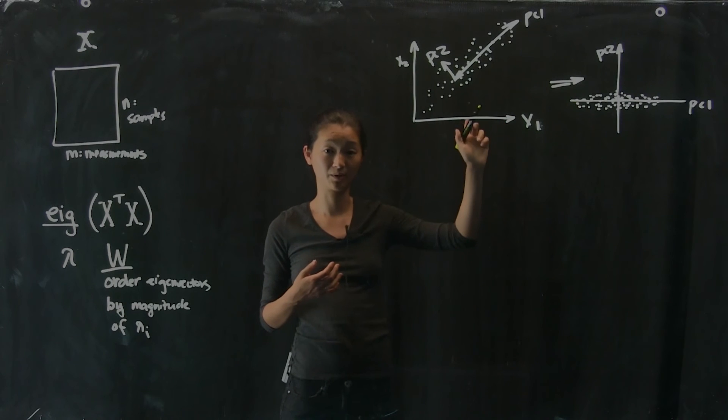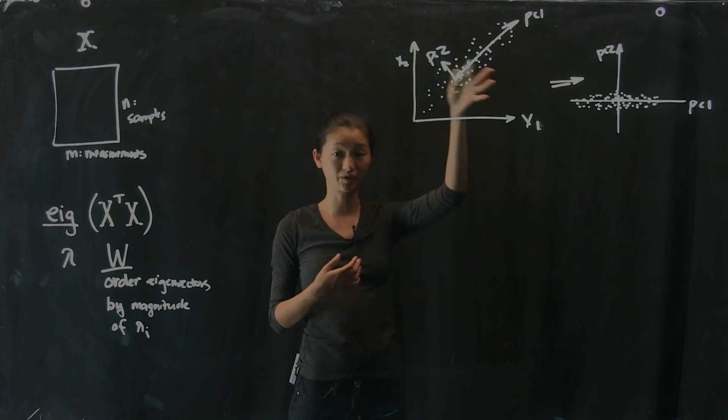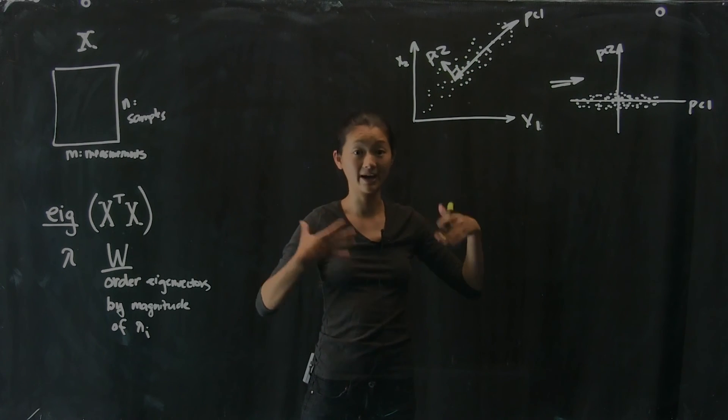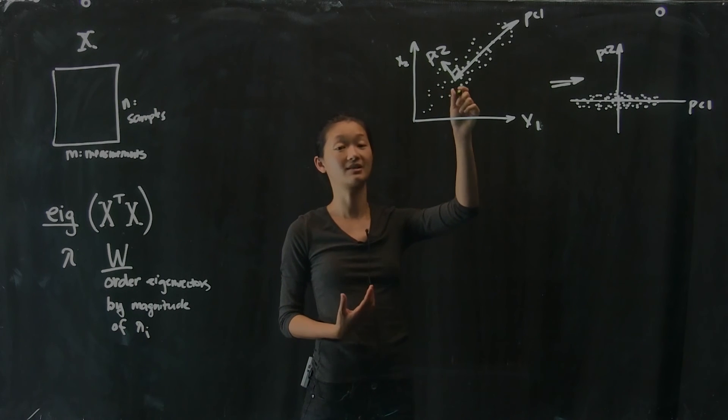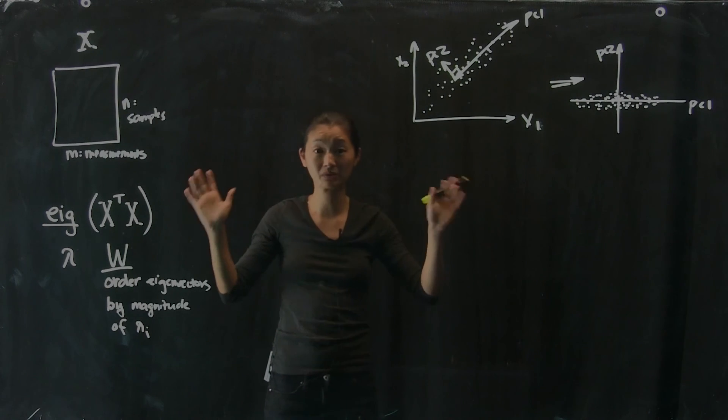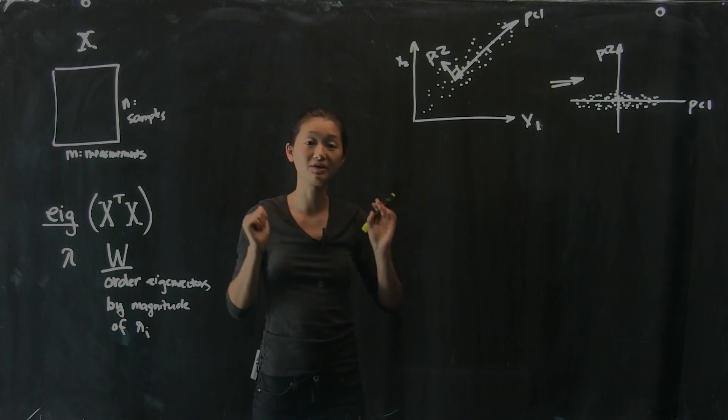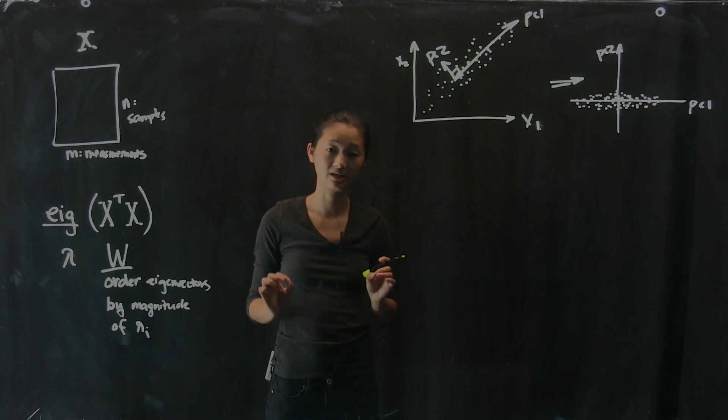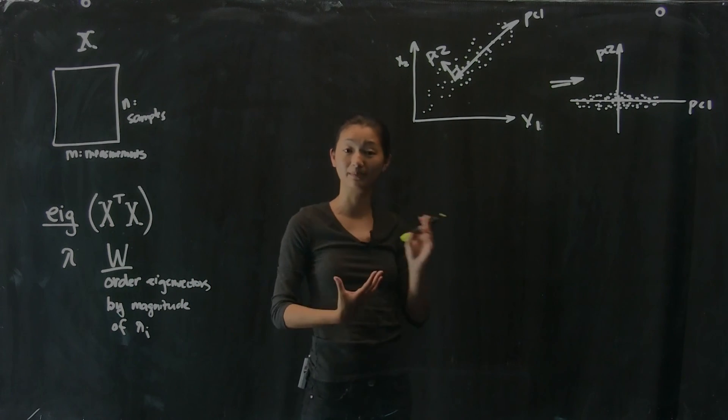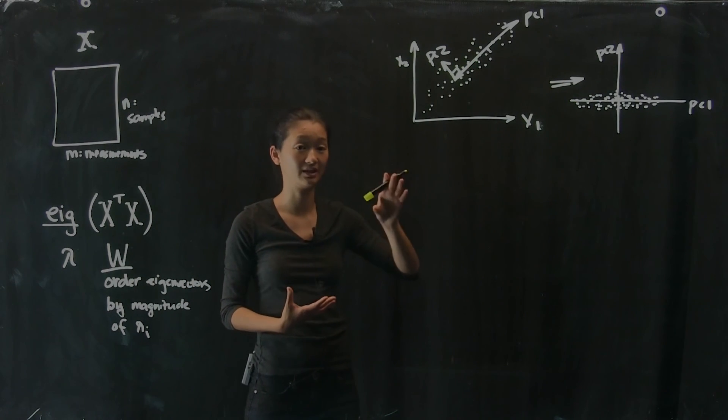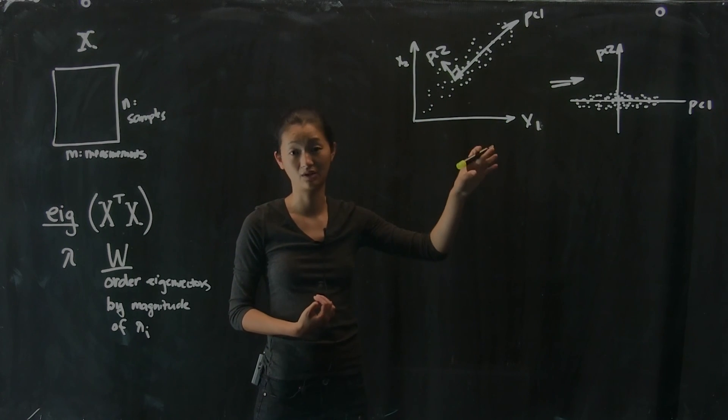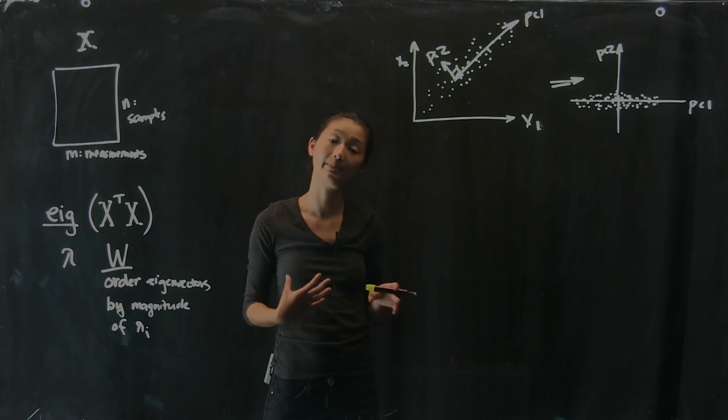So the other thing that's kind of nice is that by construction, every single one of these principal components is orthogonal. In this particular case, you can visualize the 2D because these two directions are going to be at right angles from each other. And if I had a third one, it would have to come out of the board because it would have to be orthogonal to both of the previous ones and so on and so forth. So even if you had a really high dimensional space and you compute a PCA, every single one of those PCs is guaranteed to be at right angles with every other one. And that's also really nice because if you are trying to build a model based on the projection of your data into PC space, you're guaranteed that each of those dimensions are completely uncorrelated and orthogonal to each other, which is a nice feature to come back later.